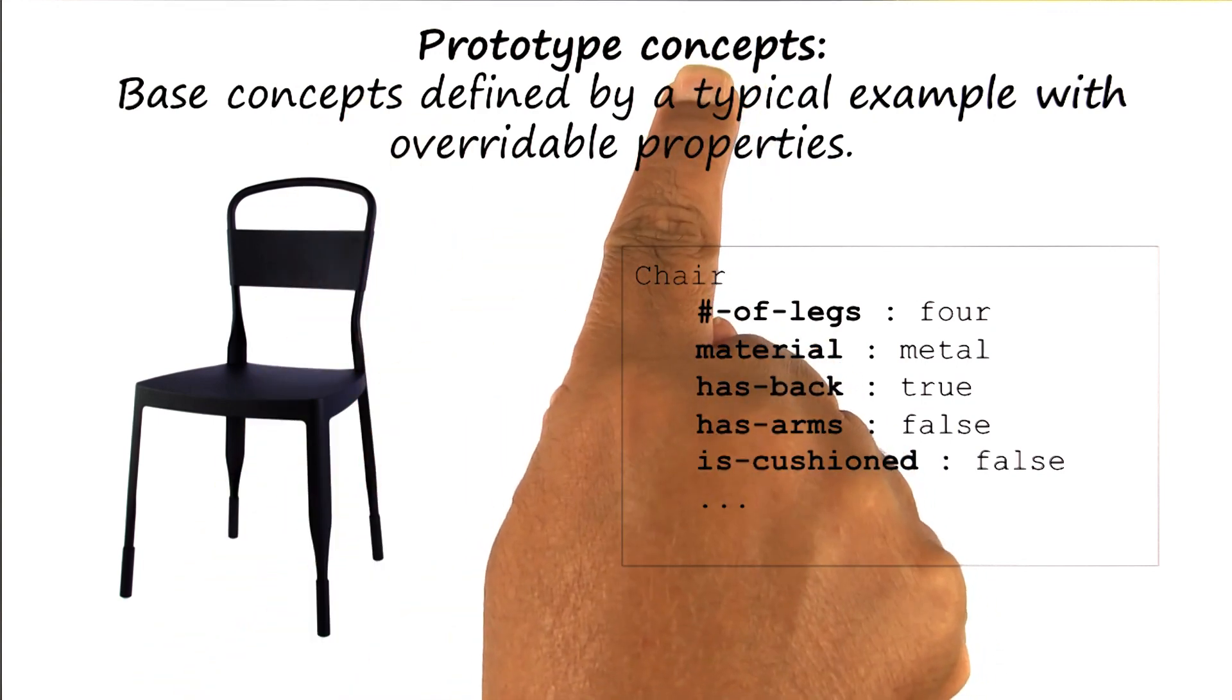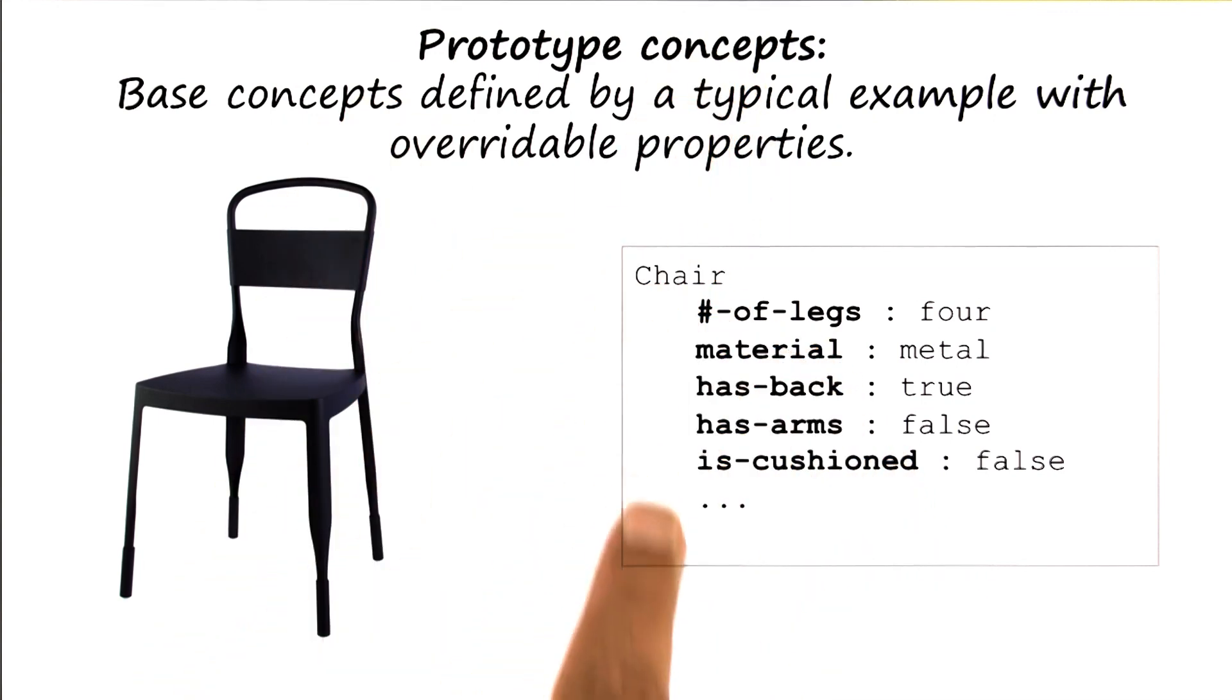So concept is the content we're going to represent. Frame is the form in which we're going to represent it. A notion of prototypical chair might be it has four legs, the material is metal, it has a back, it does not have arms, and it's not cushioned.